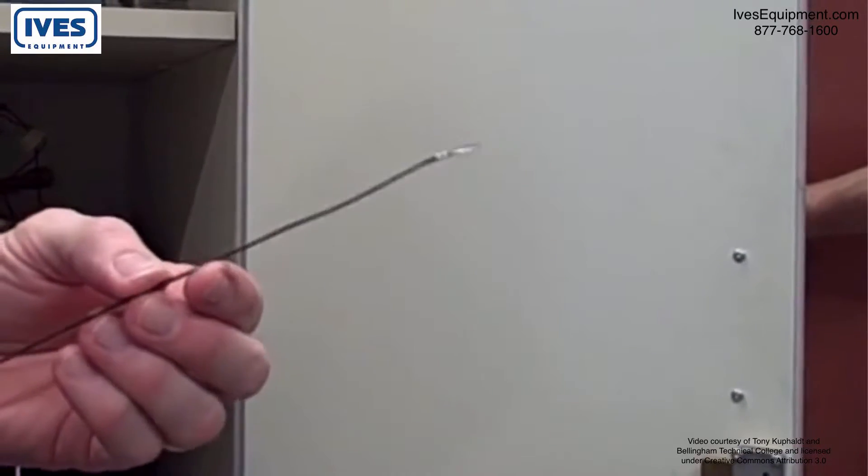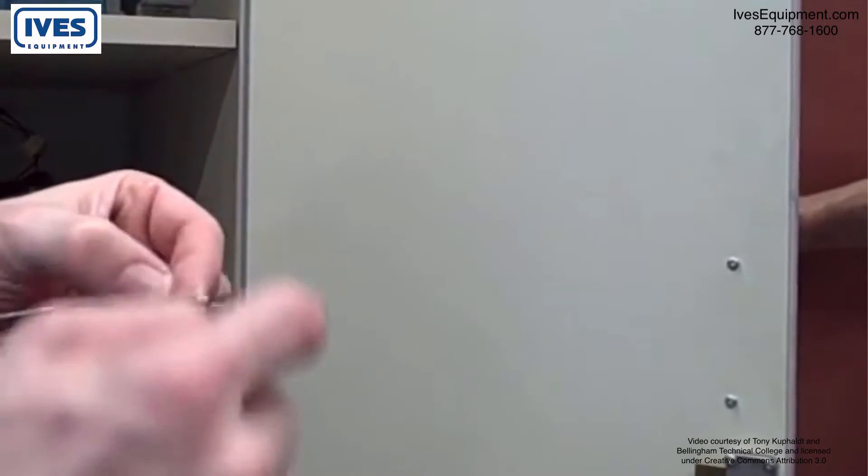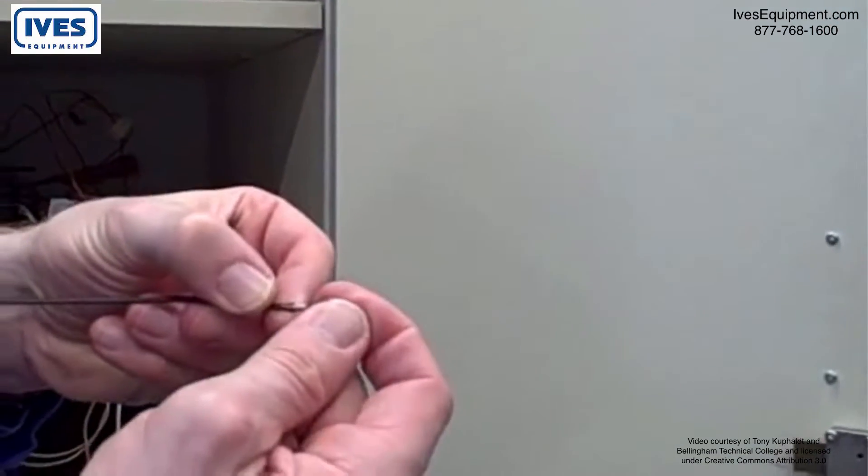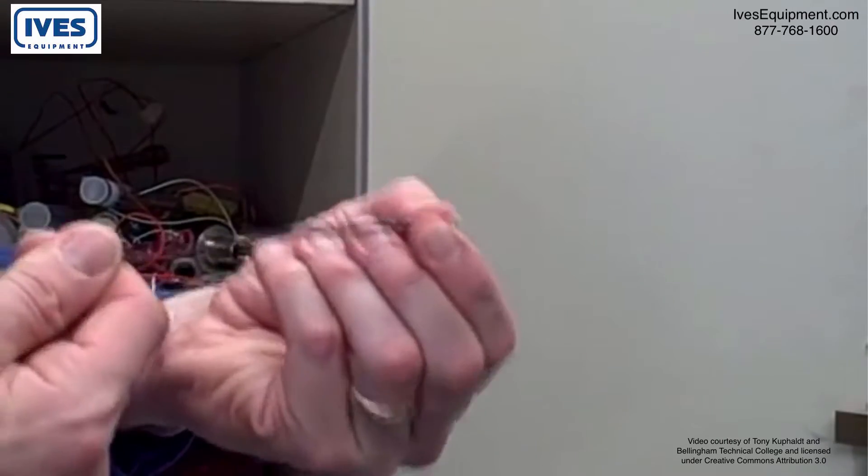This right here is thermocouple grade wire. You can tell that from the brown sheath. And if we simply took these two wires here and twisted them together or spot welded them or otherwise clamped them or silver soldered, that itself would form a thermocouple junction.